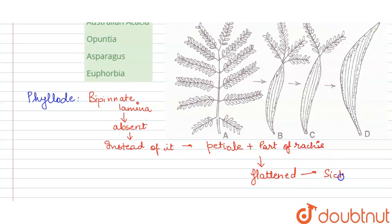They become sickle-shaped and they later on perform the process of photosynthesis, food synthesis, or we can say photosynthesis. They perform the structure of photosynthesis. Such a flattened petiole is termed as phyllode, and this phyllode is a characteristic feature.